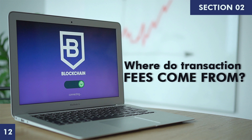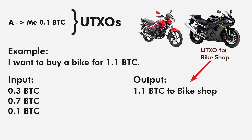Welcome back to the course 'Learn Blockchain.' In the previous video we learned about transactions and UTXOs. In this video we will learn where transaction fees come from. If you go back to the last video when we bought two bikes, you can see there is nothing like a transaction fee — 1.1 bitcoin was spent, and the whole 1.1 bitcoin was paid to the bike shop.